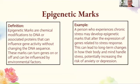Epigenetic marks are chemical modifications to DNA or associated proteins that can influence gene activity without changing the DNA sequence. These marks can turn genes on and off and can be influenced by environmental factors. For example, a person who experiences chronic stress may develop epigenetic marks that alter the expression of genes related to stress response, potentially increasing the risk of anxiety or depression.